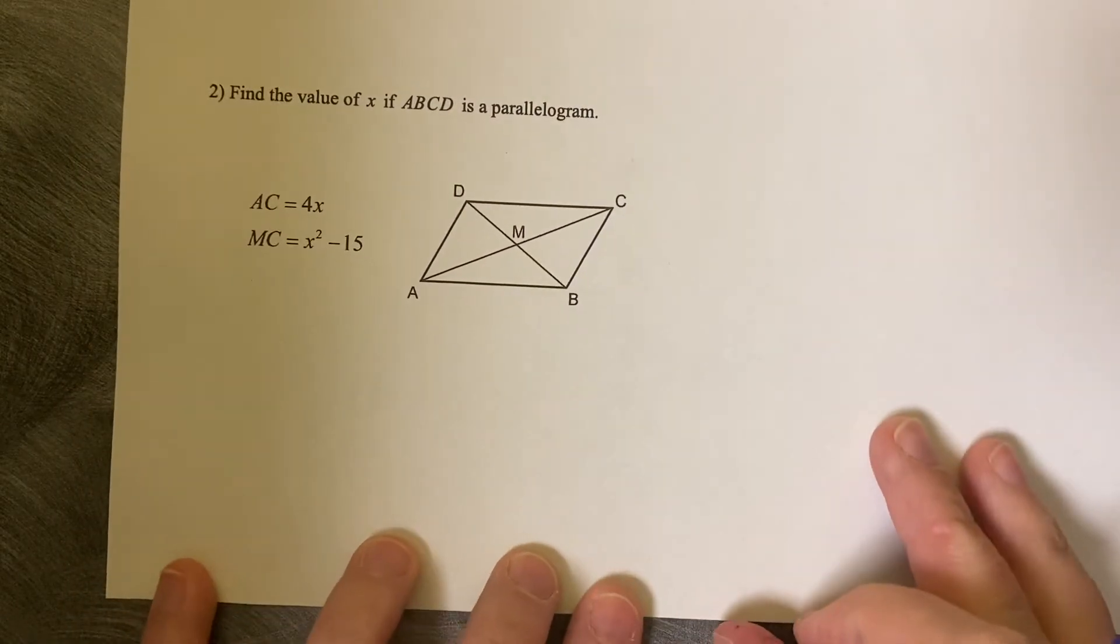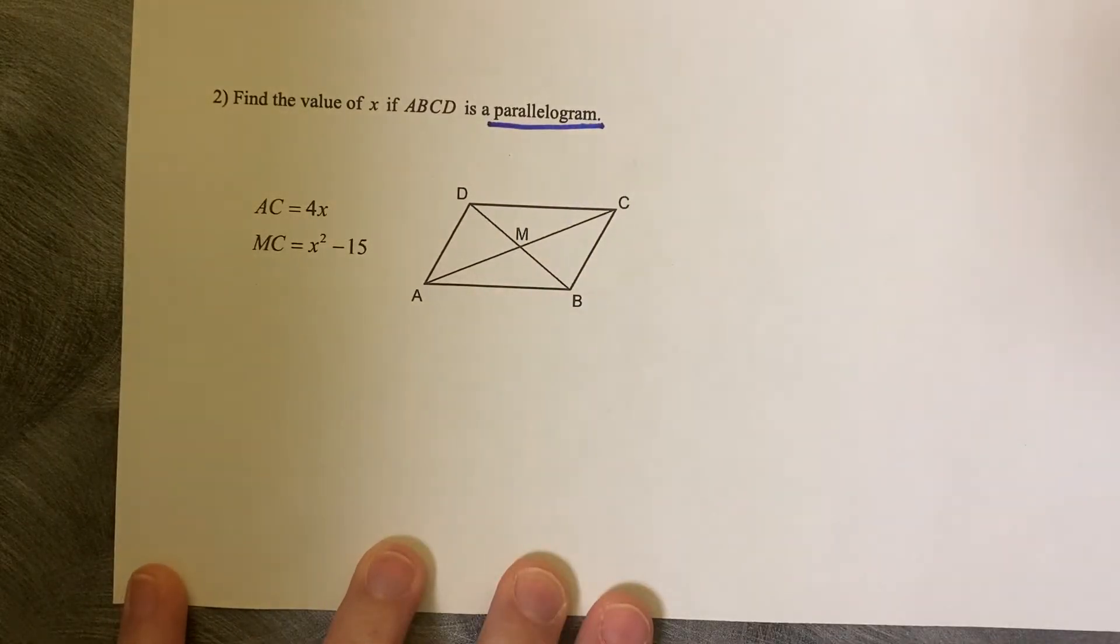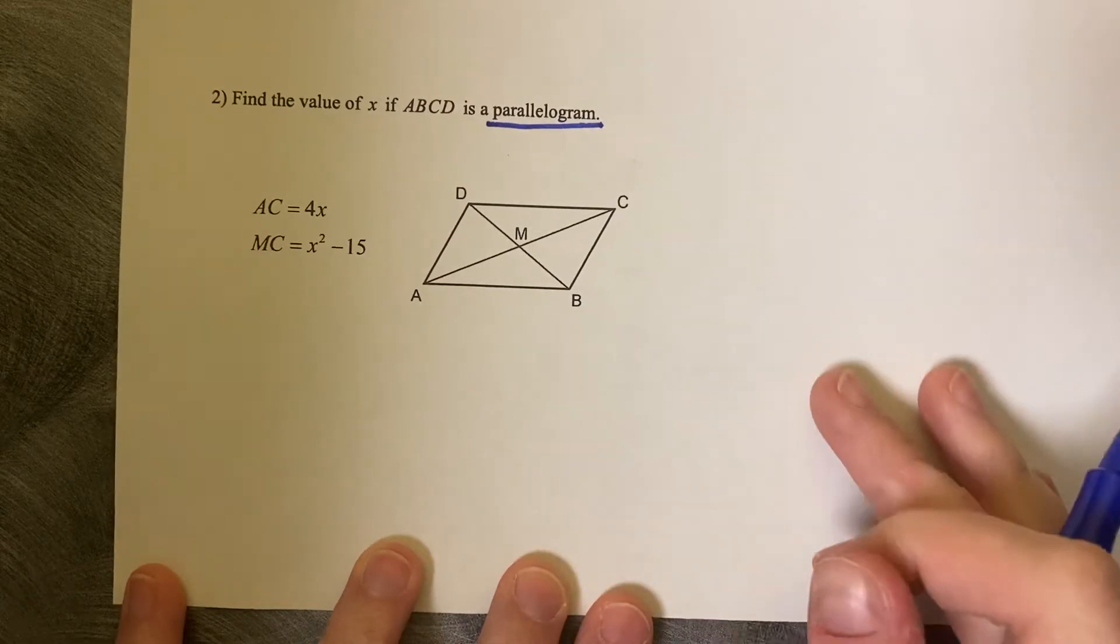Find the value of X if ABCD is a parallelogram. Again, they're telling you in the directions it's a parallelogram, so it comes with lots and lots of information.